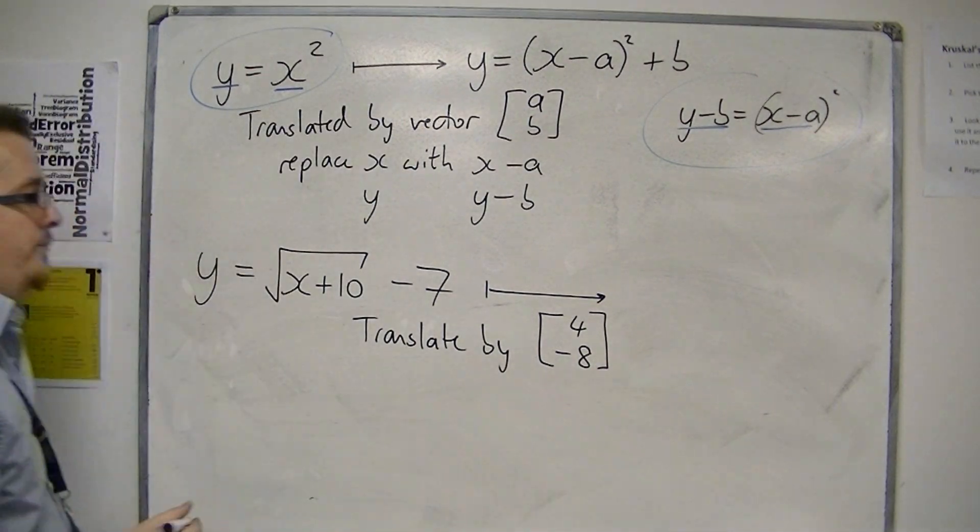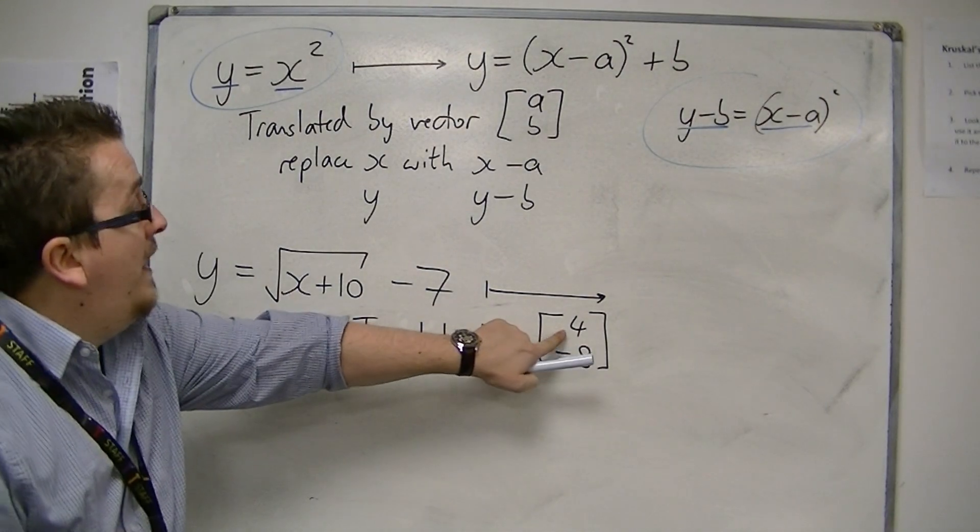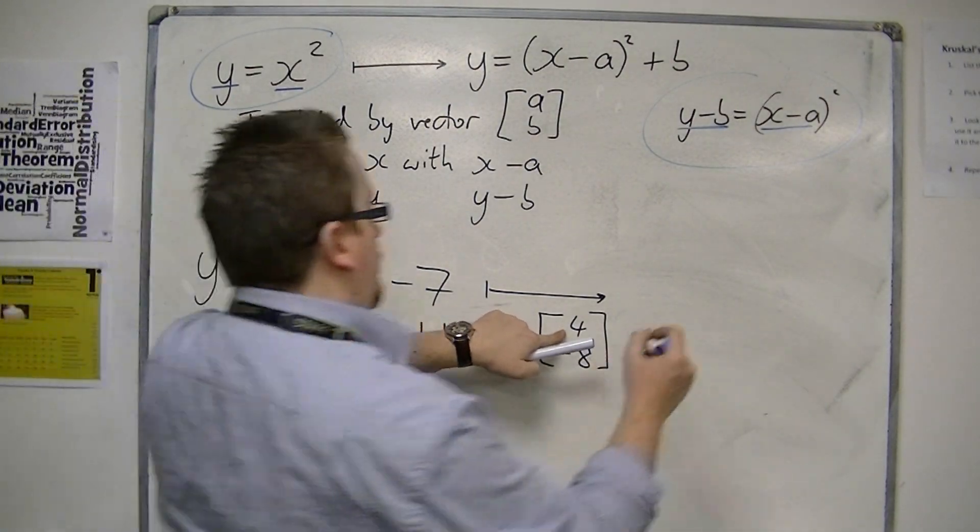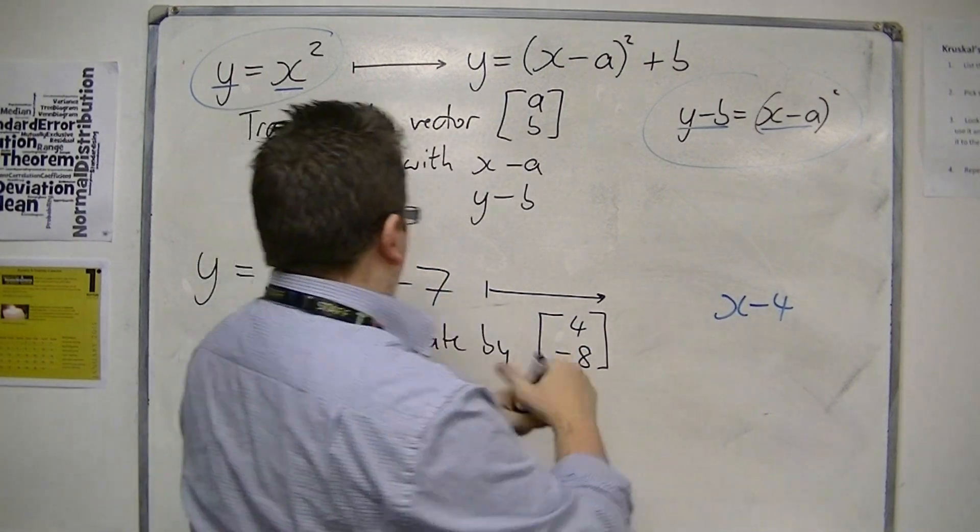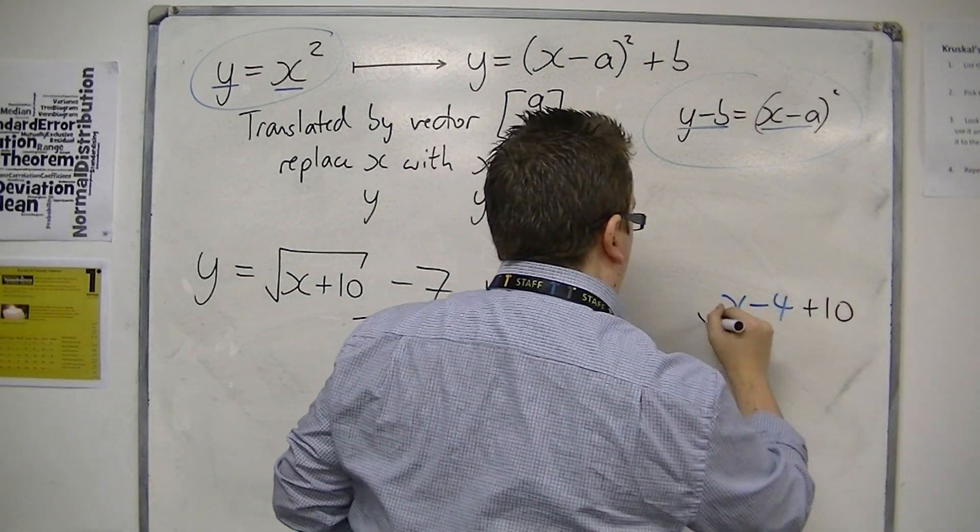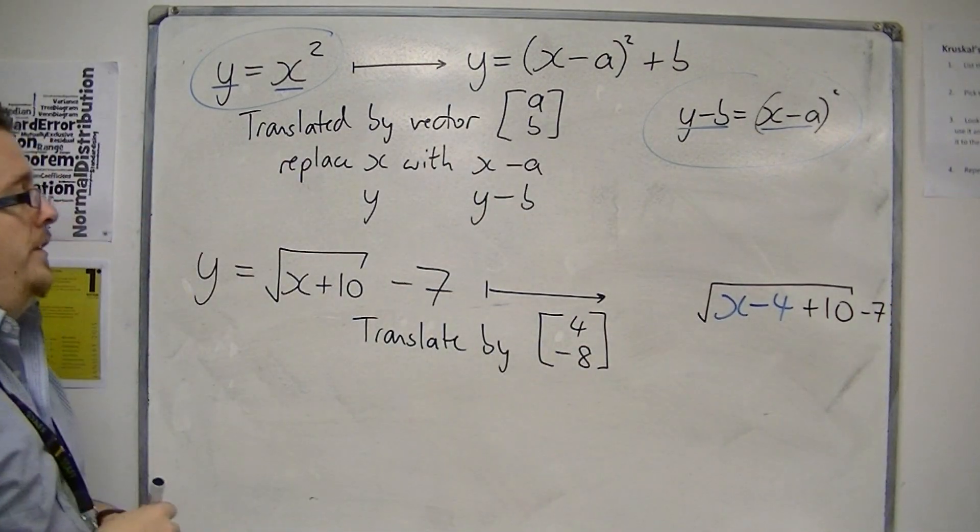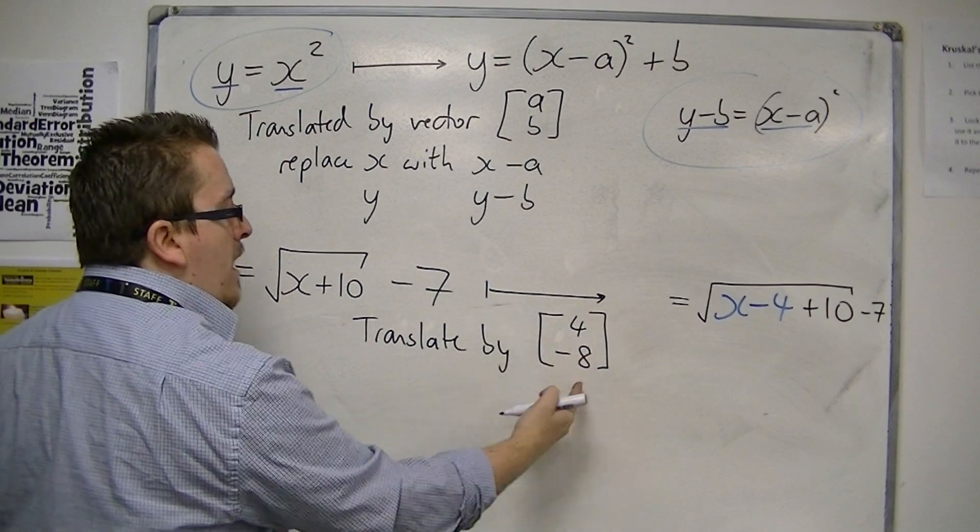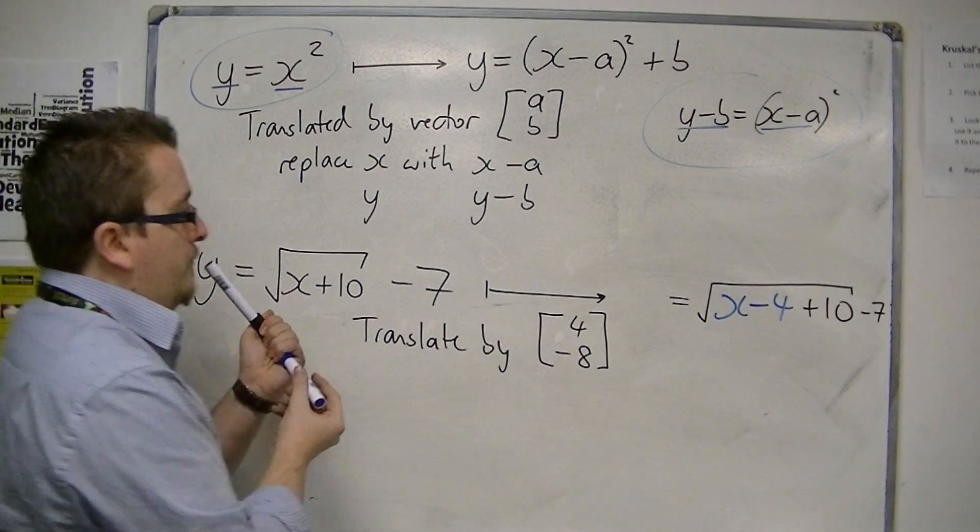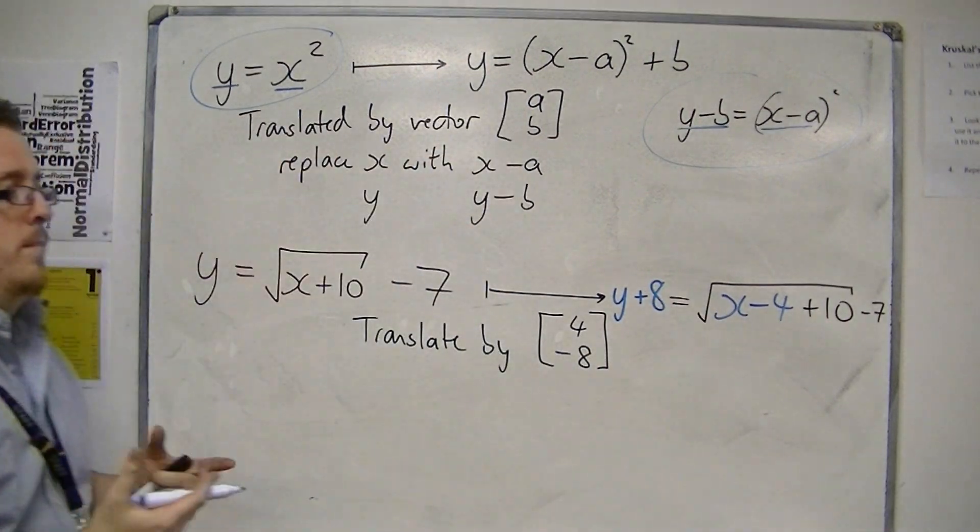then you can replace the x with x minus 4. So we've still got that take away 7 on the outside, and the y is replaced with y minus minus 8, which is y plus 8.